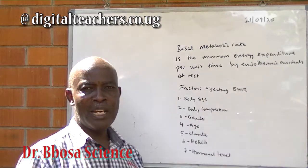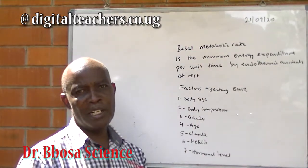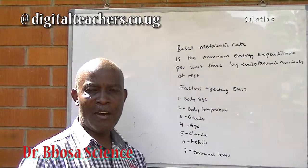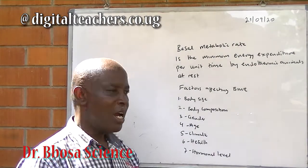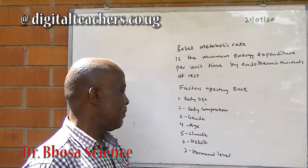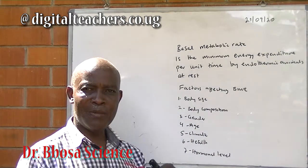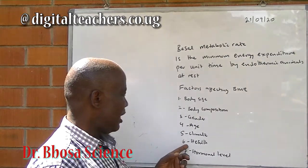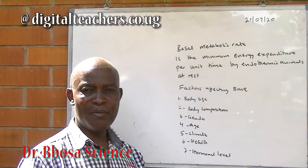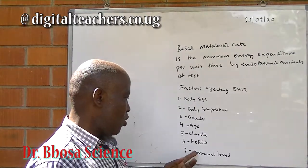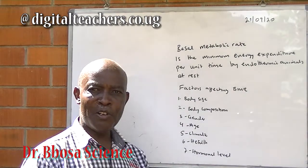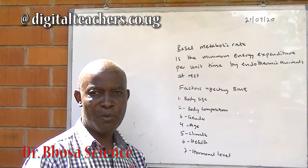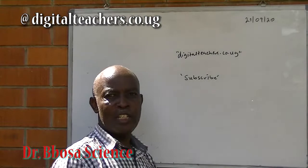Gender: generally, men have a higher basal metabolic rate compared to women. Age: children have a higher basal metabolic rate compared to adults, probably because of their body size. Climate: the body expends more energy on a cold day than on a hot day. Health: some harmful diseases may lead to a high basal metabolic rate. Hormone level: if you have too much thyroid hormone, you may expend more energy than a normal person.